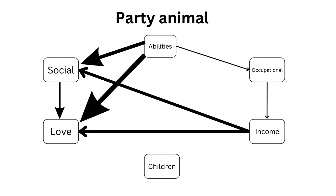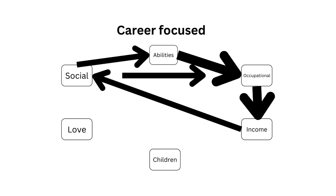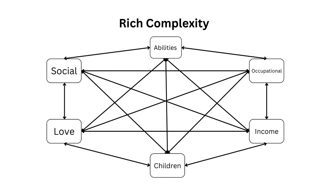So you have the party animal — his resources are going to be thrown into the social aspects, such as social love, and his income will enable him to do this. If someone is child-centred, then all of their abilities are going to be going into child rearing, and their income as well is going to be highly supportive of their children. If someone is career-focused, their abilities go into their job, which then earns them money, which then goes into their social life, which they will largely use for networking — they're not going to be too focused on love or children. And if someone has a balanced life, we can call it a rich complexity where their resource allocation is evenly spread out across all of the domains of life.